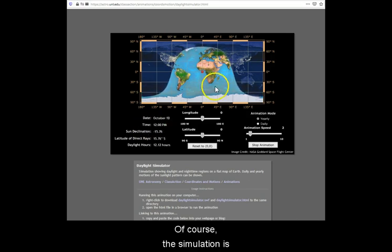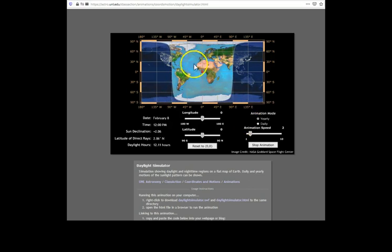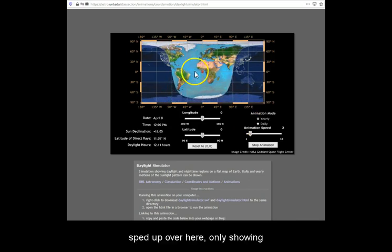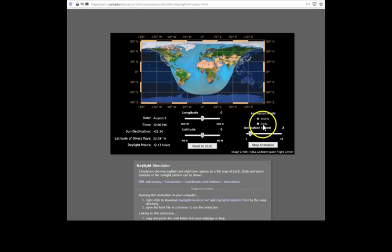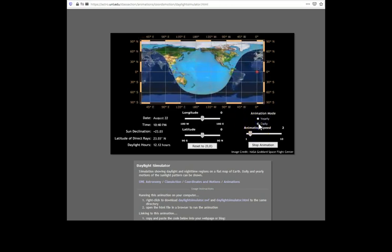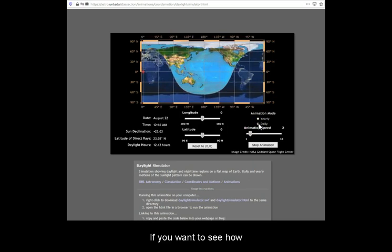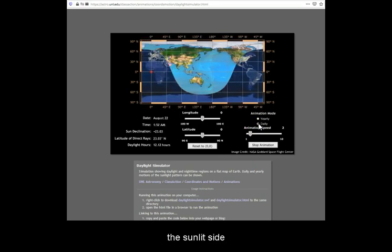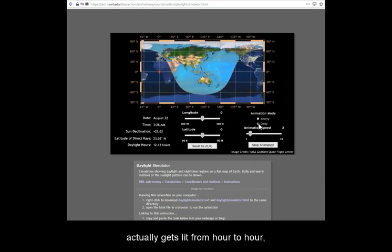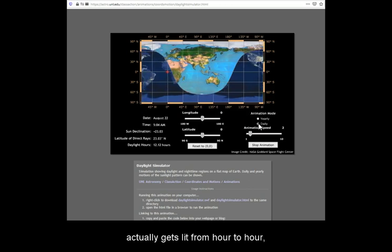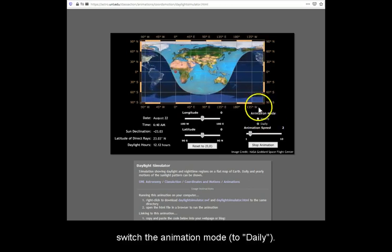Of course, the simulation is sped up, only showing day-to-day changes. If you want to see how the sunlit side actually gets lit from hour to hour, switch the animation mode.